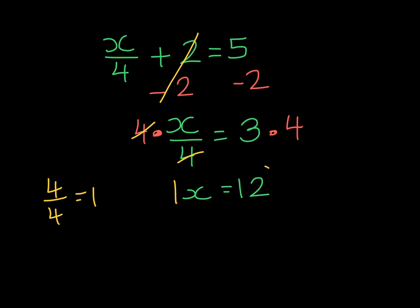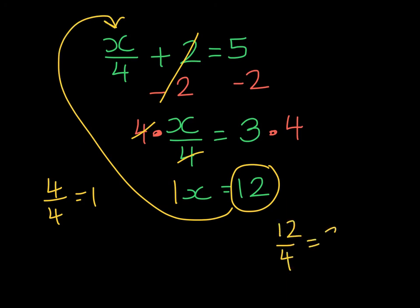We can take the solution now, substitute it into the original equation to check, and 12 divided by 4 gives us 3. If we add 2, do we get 5? Yes, we do. So we solved it correctly.